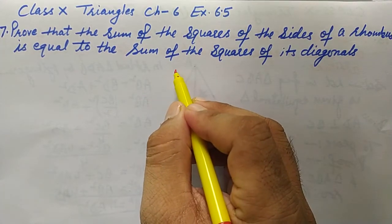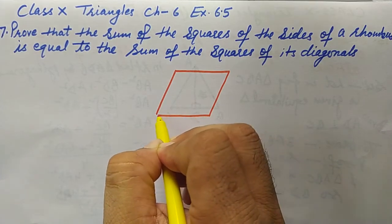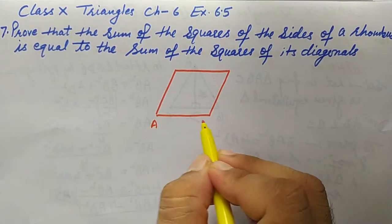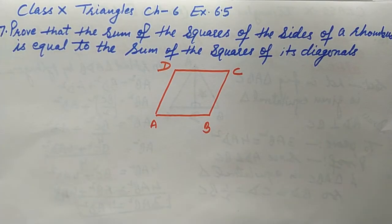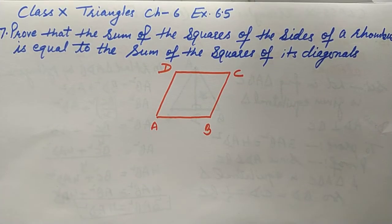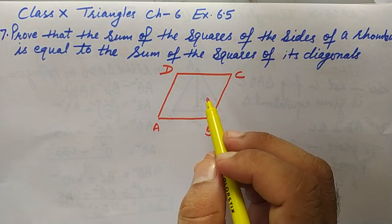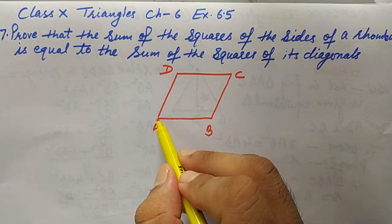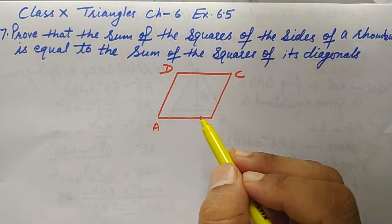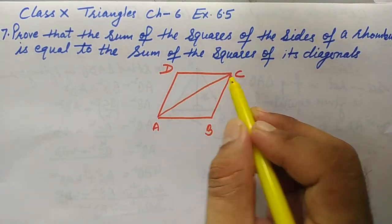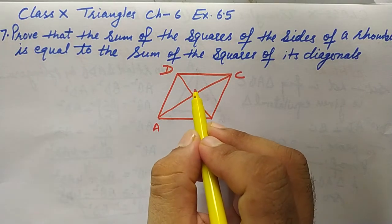Suppose this is the given rhombus. You know the properties of a rhombus — it is a parallelogram in which all sides are equal. The key properties to keep in mind are: all sides will be equal, and the diagonals bisect each other at right angles.